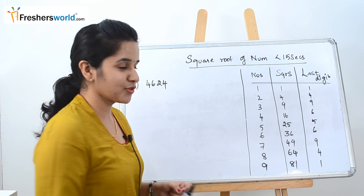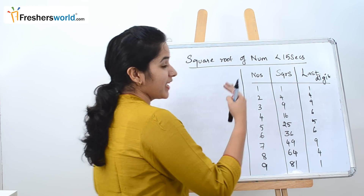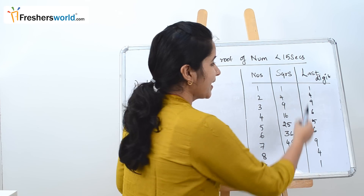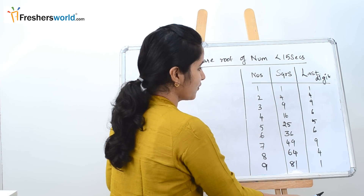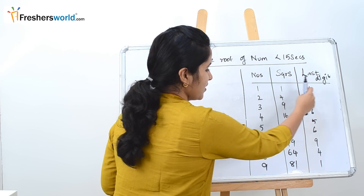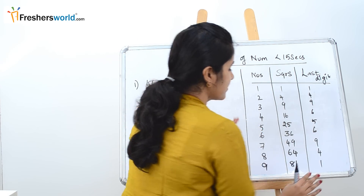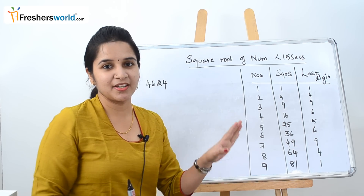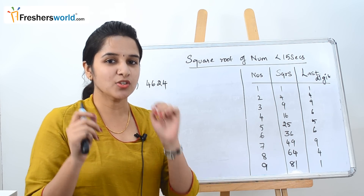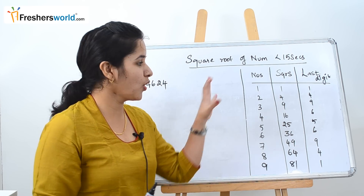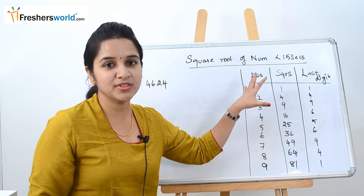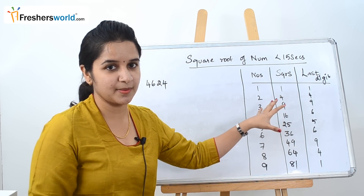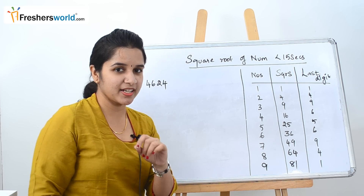The other thing you should know is to take another column and write the last digit of each of these squares. Once you write the last digits, just keep that table safely. Once we solve the sum, we will see how we are going to use this table.